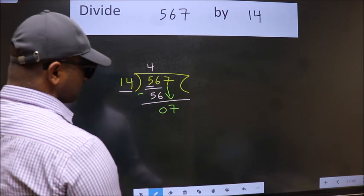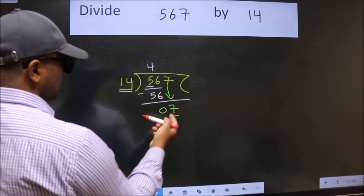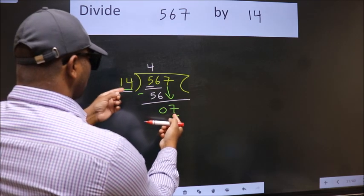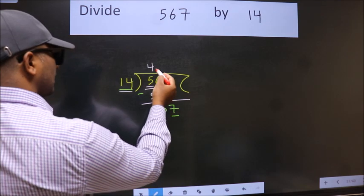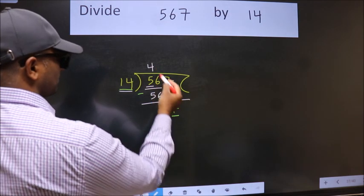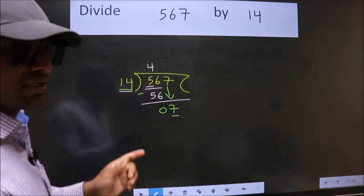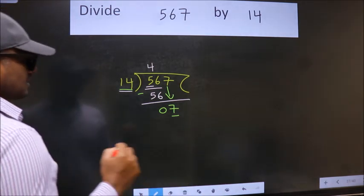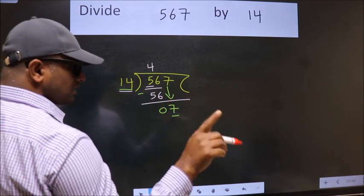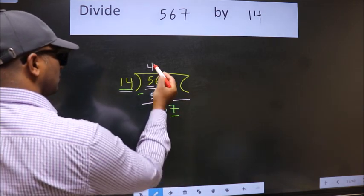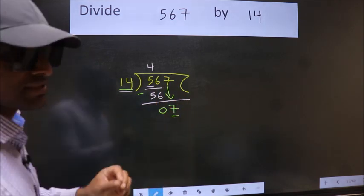And the mistake is this. Here we have 7. Here 14. 7 is smaller than 14. So what many do is, they directly put dot take 0. Which is wrong. Why is it wrong? Because just now you brought this number down, and in the same step, you want to put dot take 0. Which is wrong.